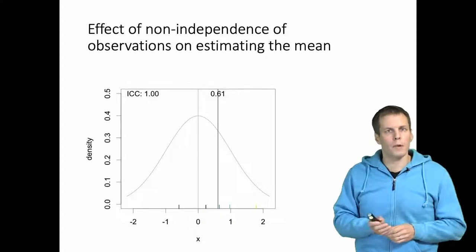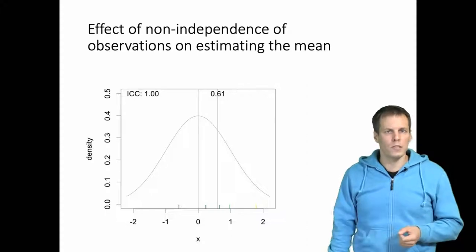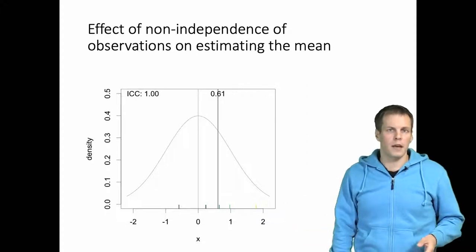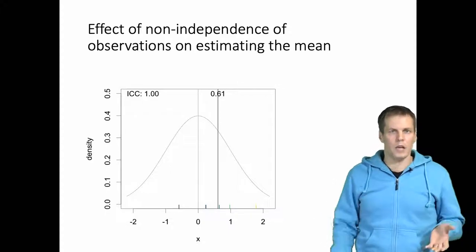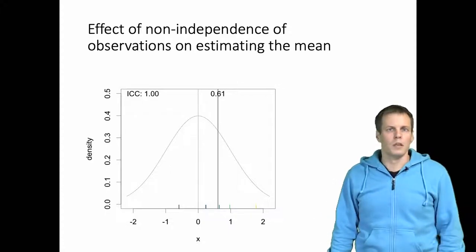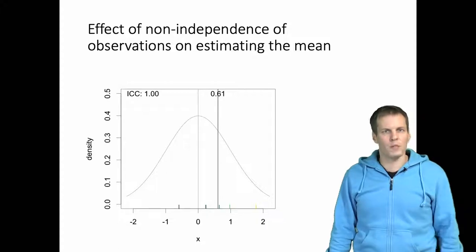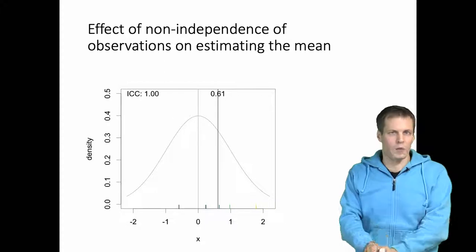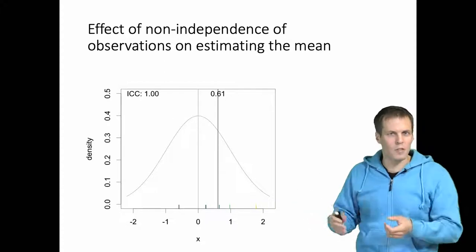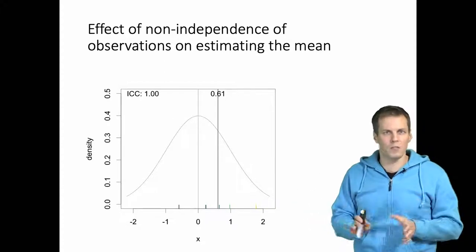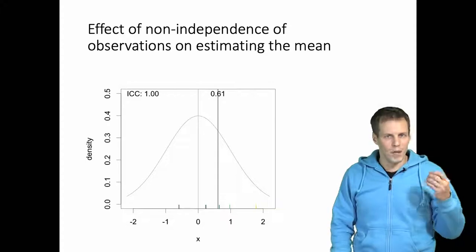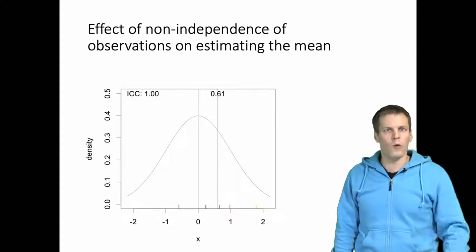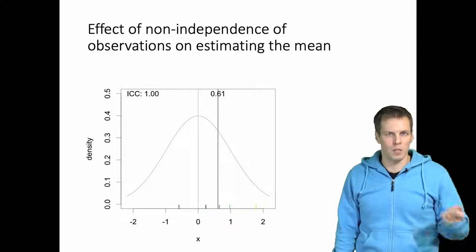For example, if we want to measure the average height of people at a university and we have a measurement tape with some measurement error, it's better to measure 100 different people than to measure the same 10 people 10 times. And if you have no measurement error, then measuring the same 5 people over and over will not improve the precision of your estimate.